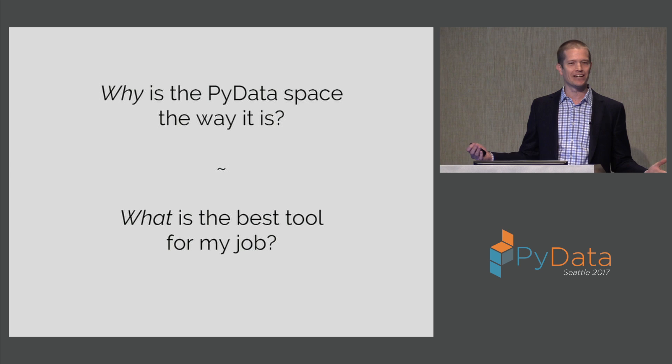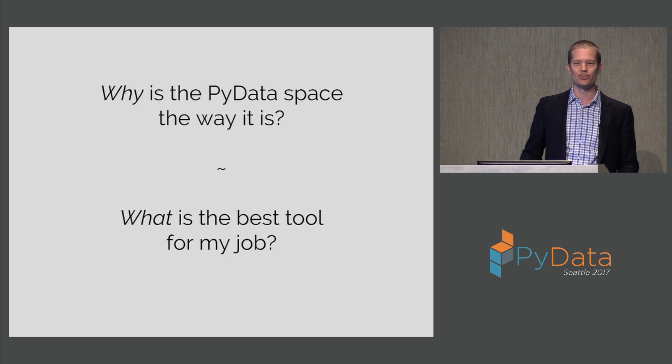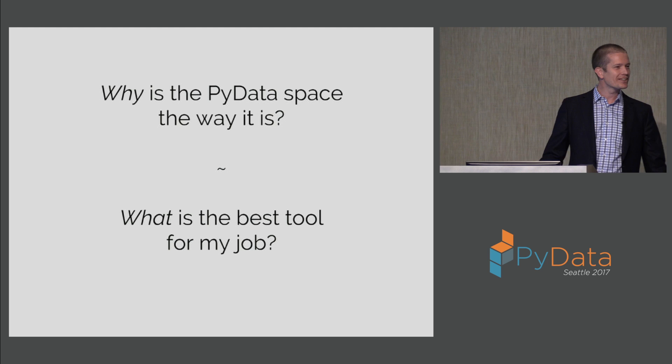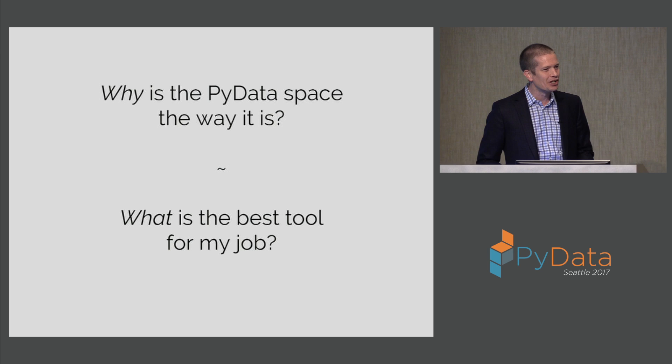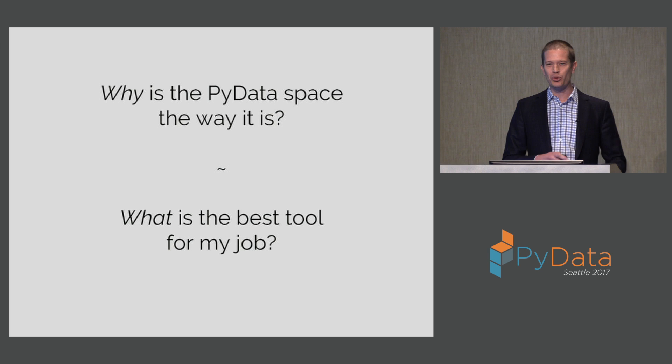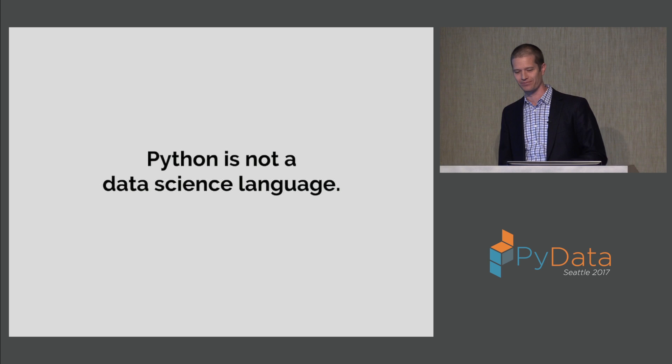Those questions boil down to basically two things: why is the PyData space the way it is — why is the collection of packages and tools the way it is right now — and that gets back to some of the history of how we've gotten to where we are. And then: what is the best tool for the job, which is more about having a catalog of associations — if I want to do this thing, I should look at this tool. So I'm going to do two parts: first delve into the history of how the PyData ecosystem got here, then do a quick survey of what I think of as the most important fundamental tools.